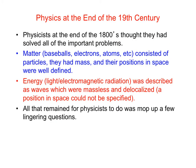Quantum mechanics was really developed in the first part of the 1900s, in the 20th century. At the end of the 1800s, physicists thought they had all the important problems in the world figured out, or in the universe for that matter. They kind of had the universe divided into two categories: there was matter and energy. Matter was anything that has mass - so baseballs, electrons, atoms - and it was understood that all of these things consisted of particles. They had mass and their positions in space were well defined.